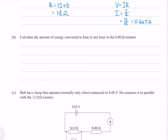Calculate the amount of energy converted to heat in one hour in the 6 ohm resistor. For this we need to use the equation that power is the change in energy over time. Multiplying both sides by time gives us the change in energy equals Pt. Our T is one hour, which is 3600 seconds (60 times 60). But what we don't know is our power.